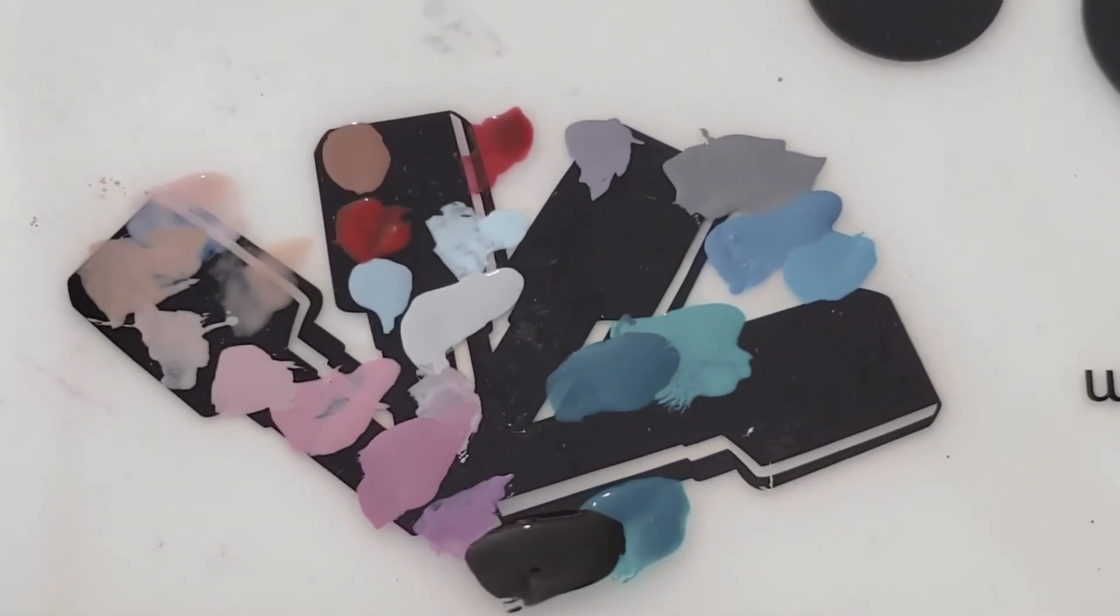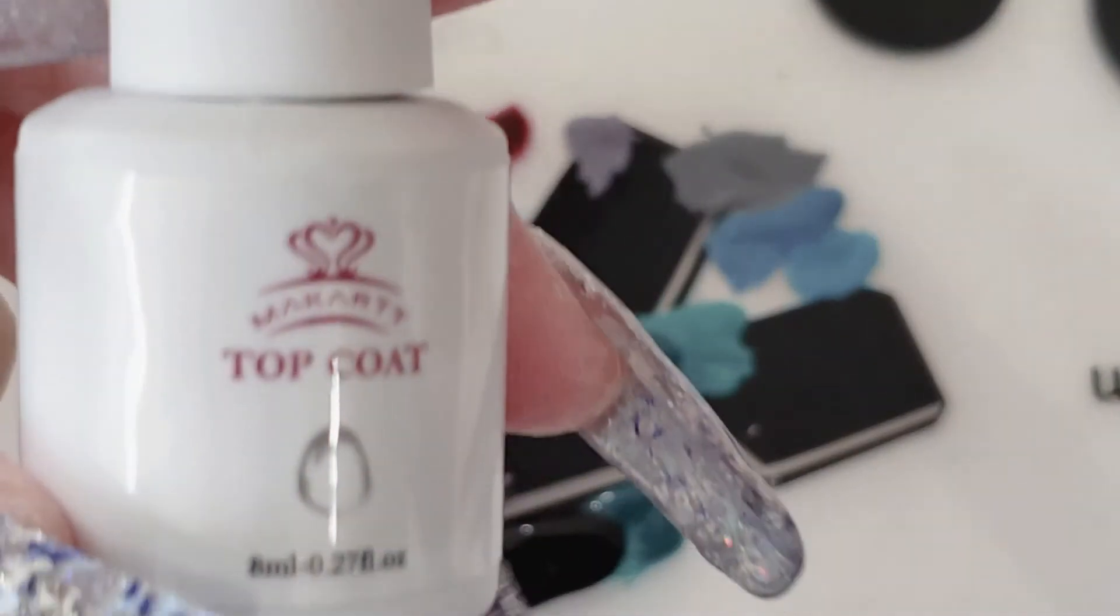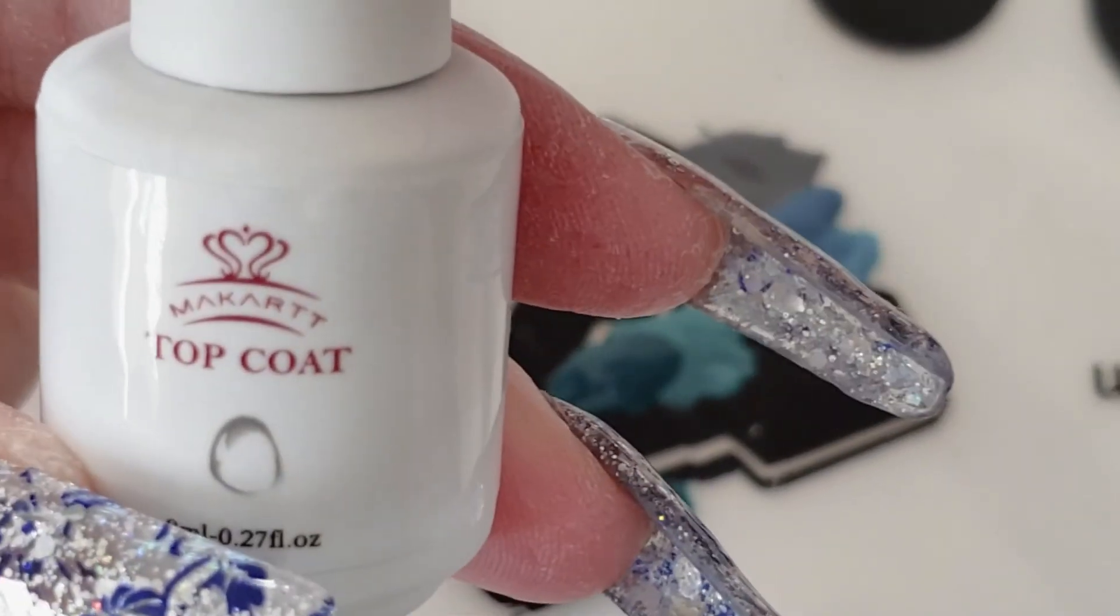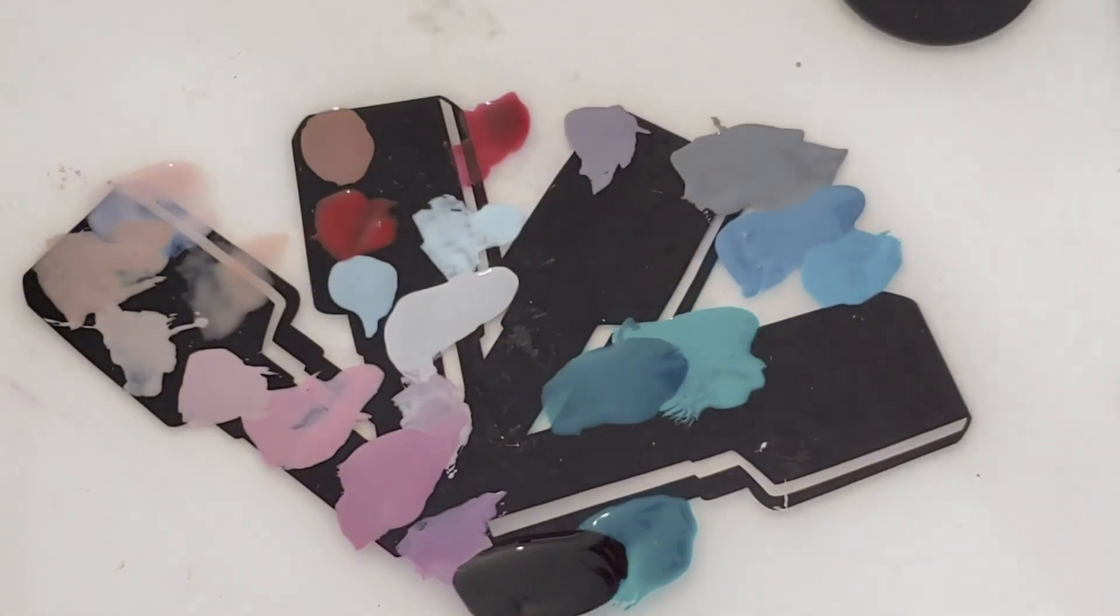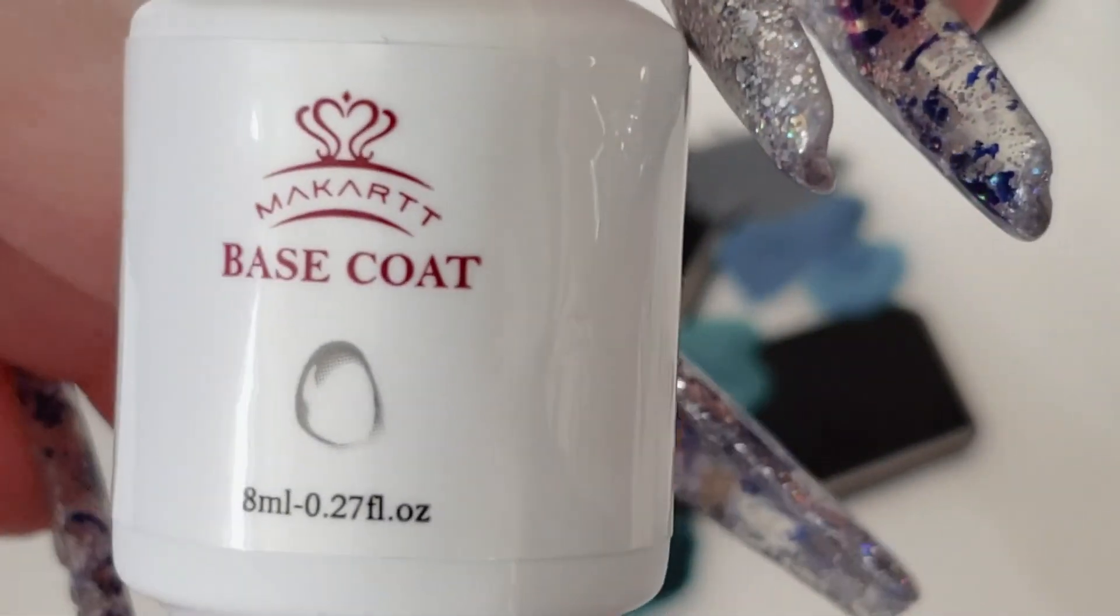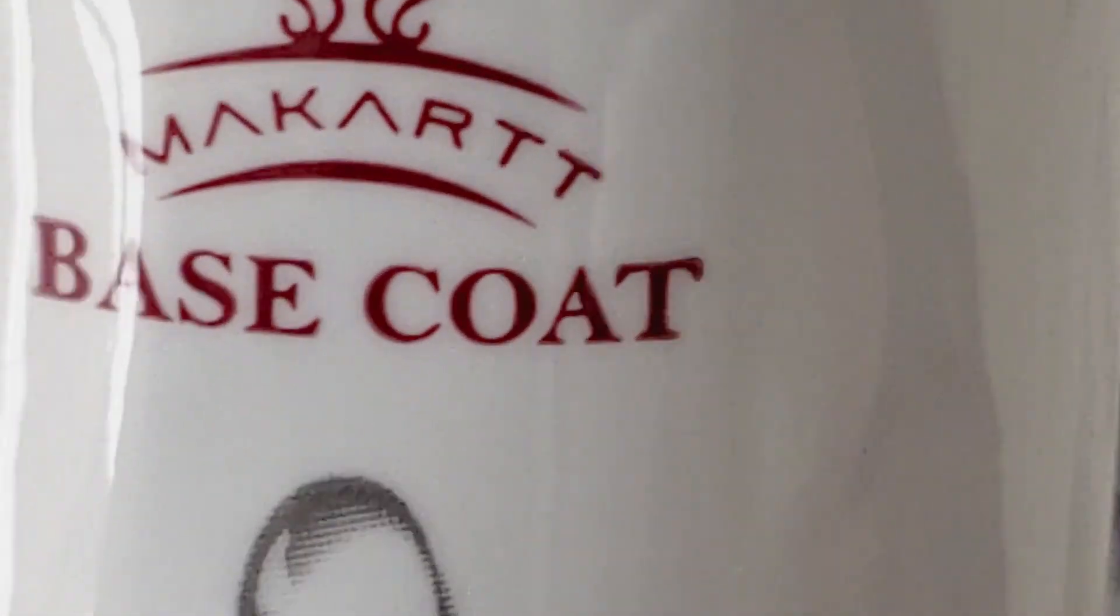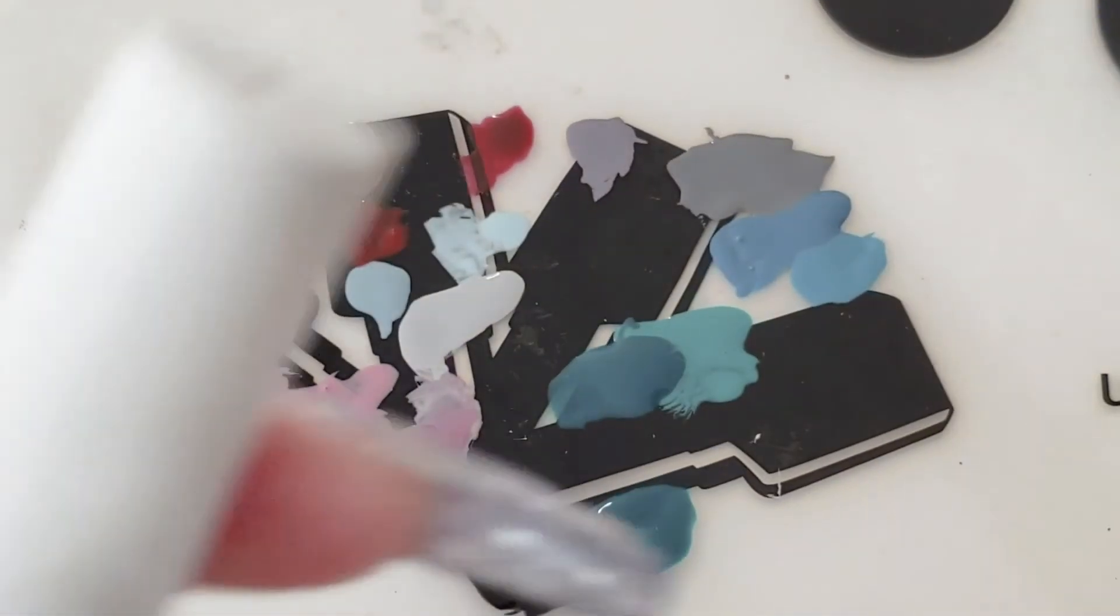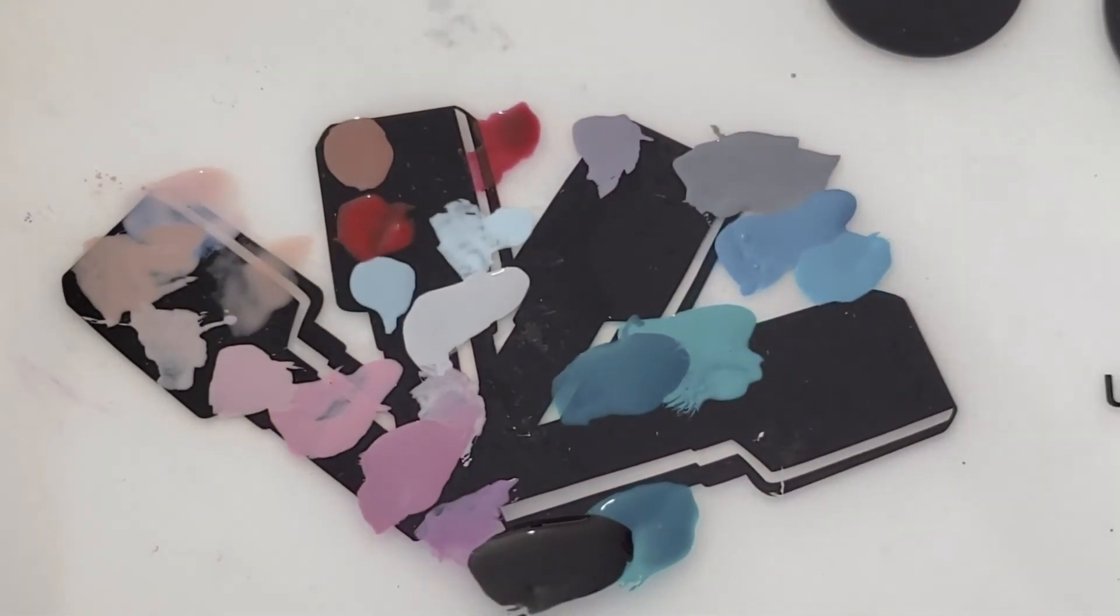Let's see, hopefully you guys can see all the colors well enough. And the last two bottles are base and top coat, I believe. Let's just zoom in and take a look at what it says. Top coat and base coat. Okay, so those are all 22 colors in the McCart gel polish collection.